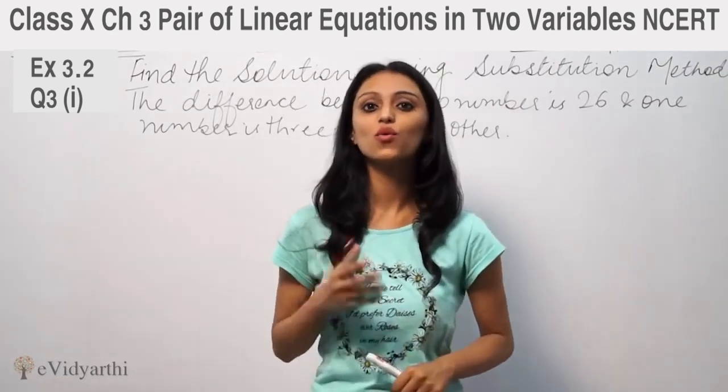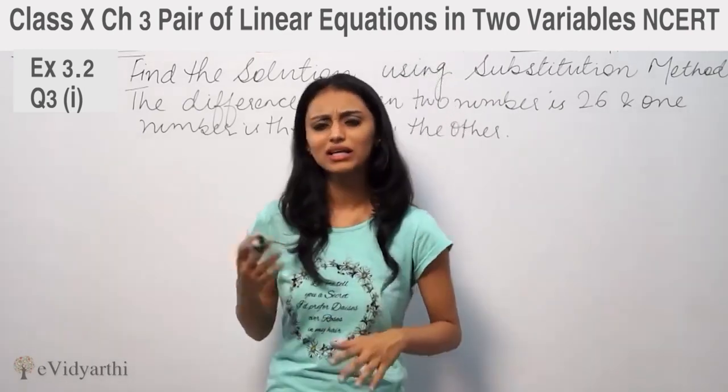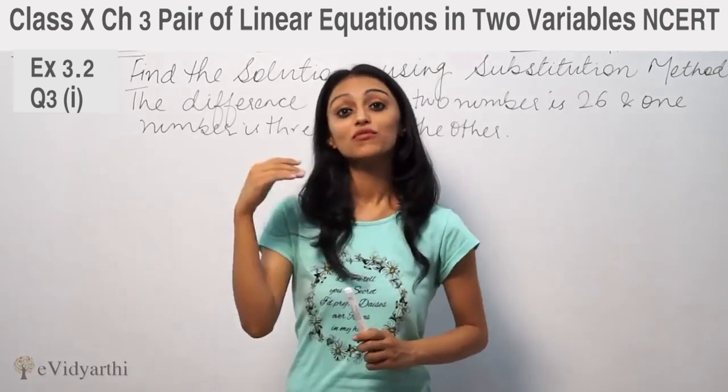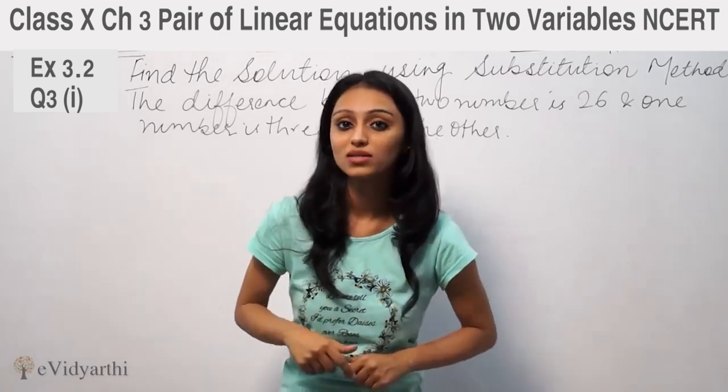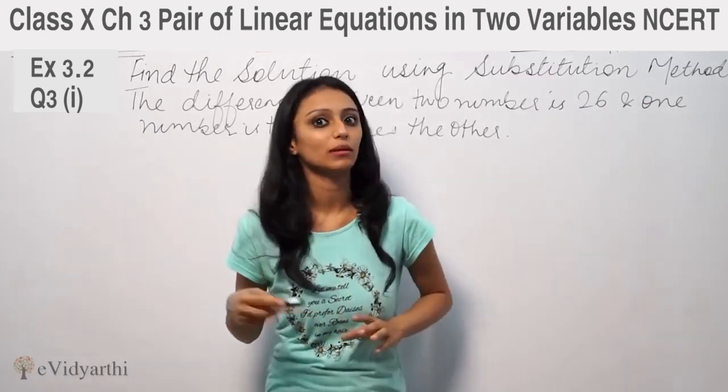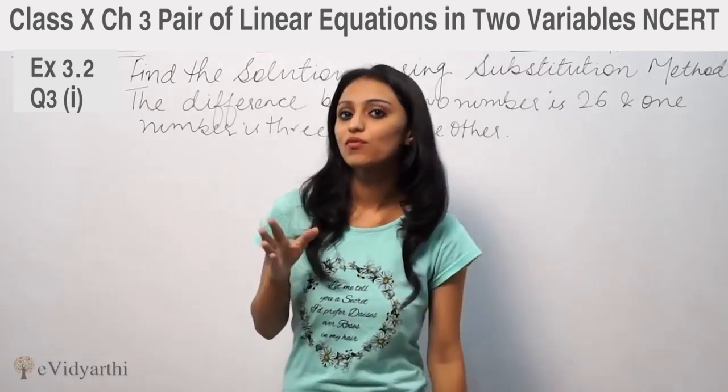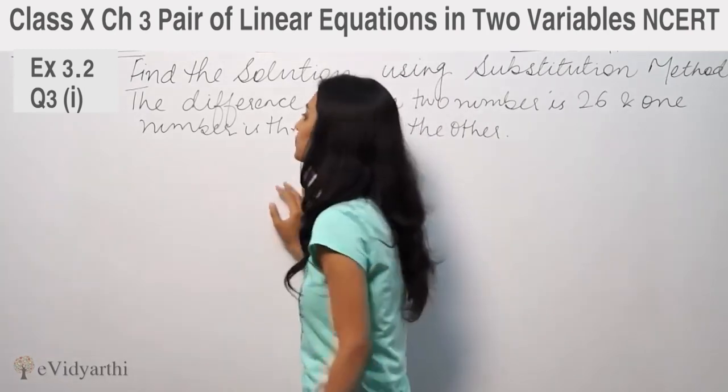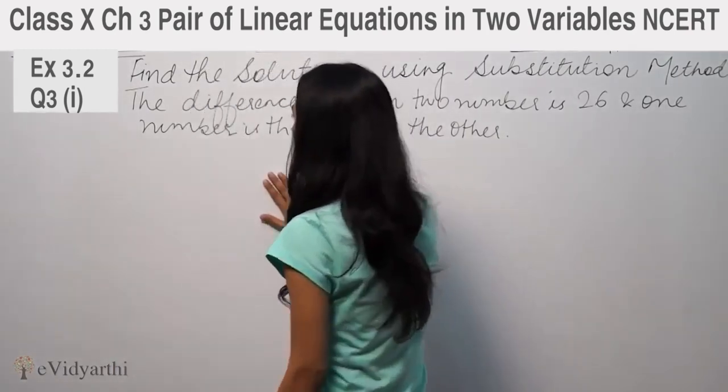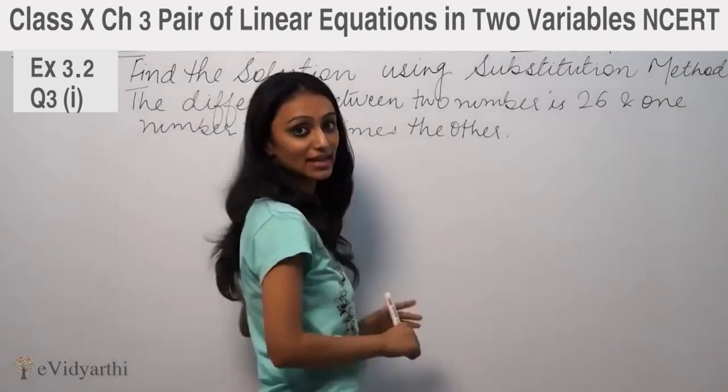who has scored 90 out of 100 and you scored 40. So you can give a tricky answer that I scored 2 marks less than half of your marks. So this type of questions we are going to do here. This is basically a word problem from exercise 3.3 from your NCERT.